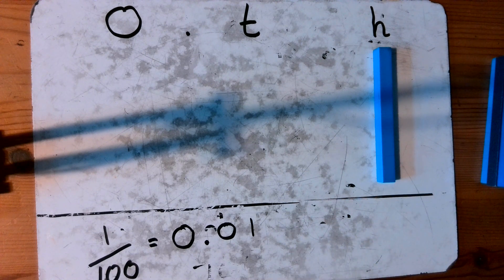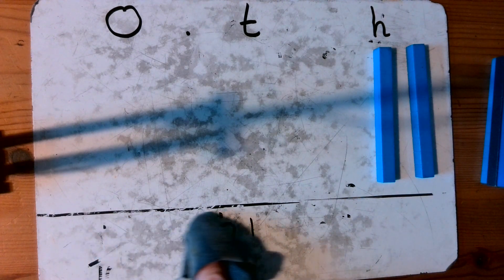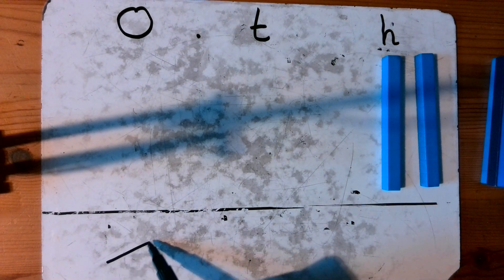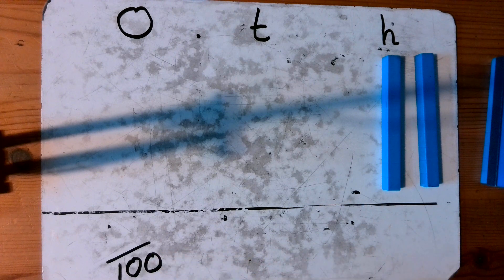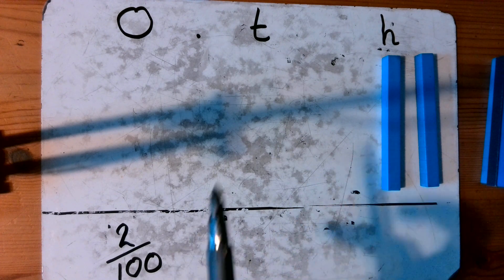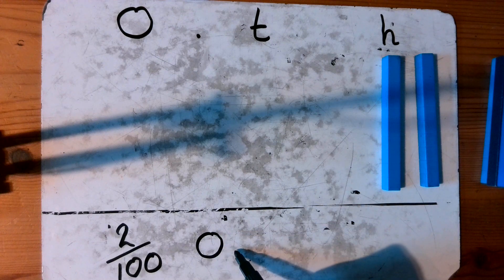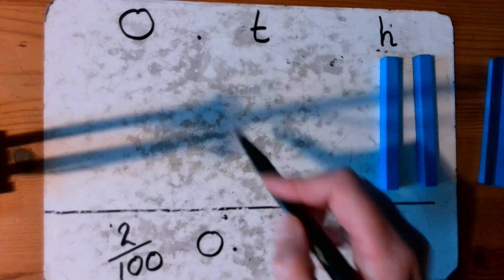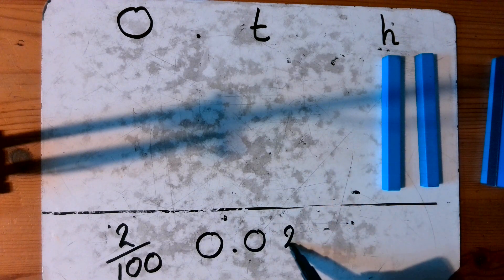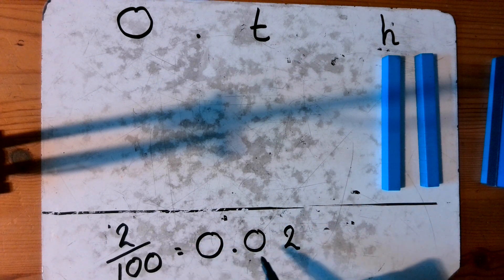How about then if I had two hundredths? Writing that as a fraction, my denominator is going to be a hundred because my whole is split into a hundred equal parts and I have two of those parts. To write it as a decimal, looking at place value again: I have no whole numbers, the decimal point shows I'm dealing with decimal numbers, I have no tenths, but I do have two hundredths. So two hundredths is equal to zero point zero two.